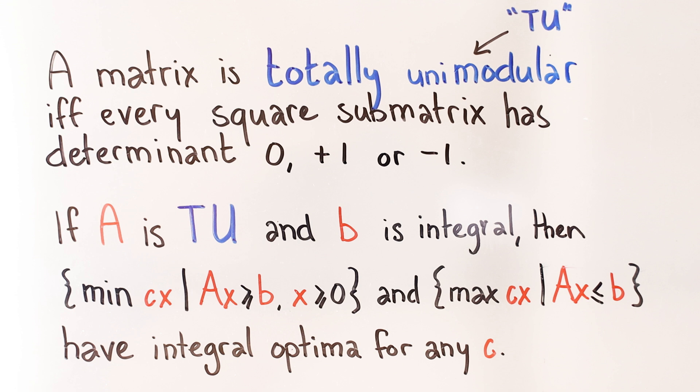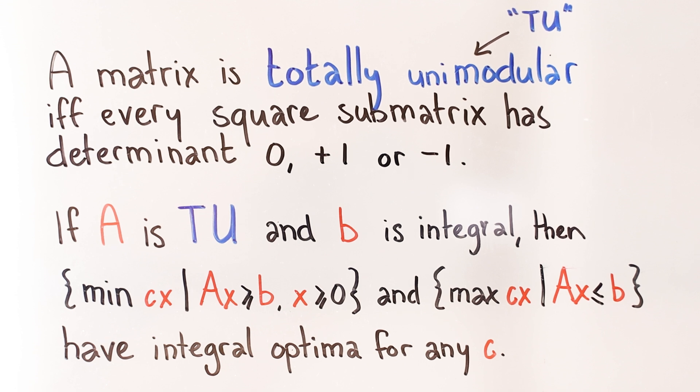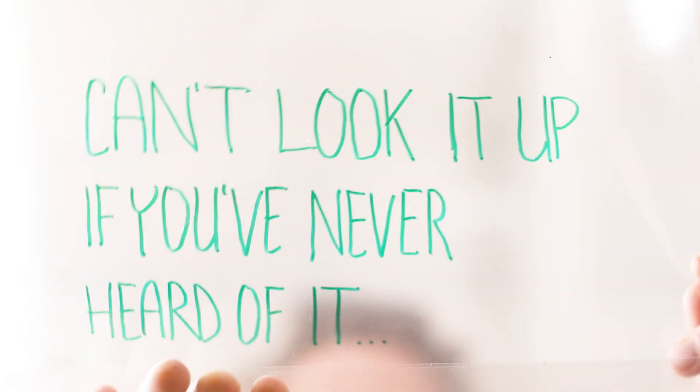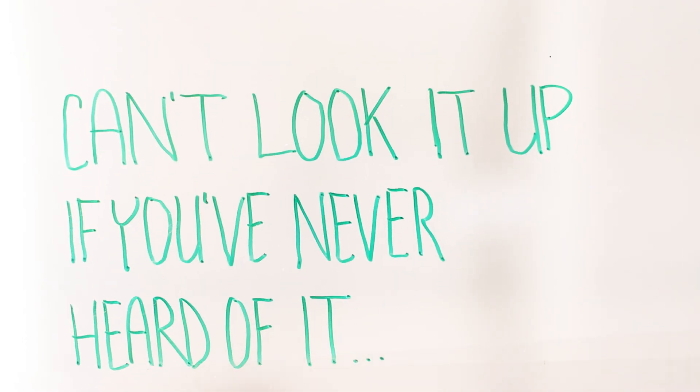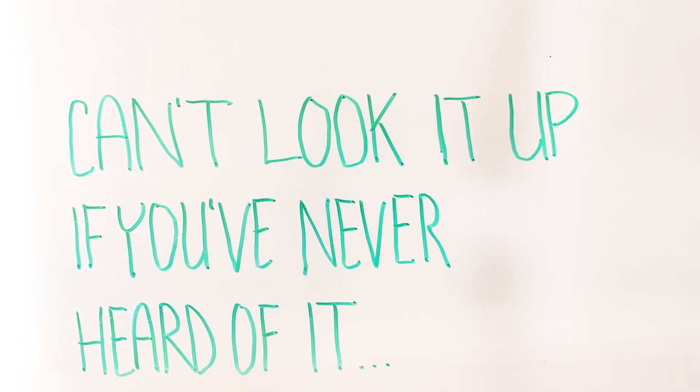Let's finish up with some examples. The LP for matching is totally unimodular, and so is the LP for network flow. Then there are some conditions with blocks of consecutive ones and minus ones, but I'm not even going to go there. Just look it up if you ever need to.